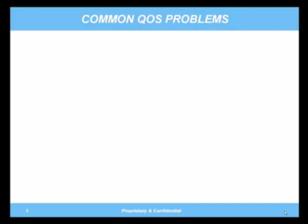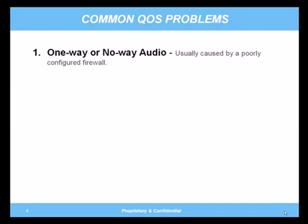Let's talk about some common problems that can affect QoS. One is one-way audio or no-way audio. This is a very common issue that affects companies using VoIP. This issue is, I would say 99.9% of the time, caused by a firewall with poor or no SIP ALG, or SIP awareness capability. This is why Bandwidth.com and other carriers have standardized on specifically tested application layer gateway firewall appliances. Examples we use would be the Ingate Separator or the Edgewater Networks Edgemark appliance.